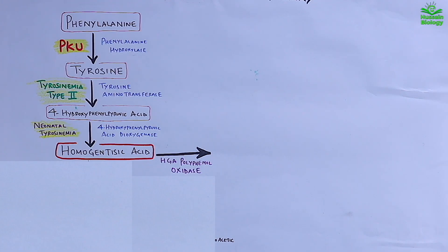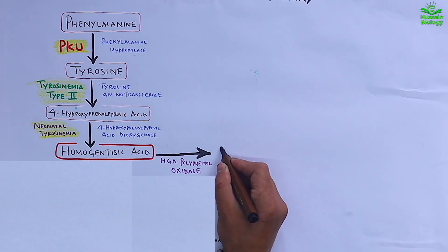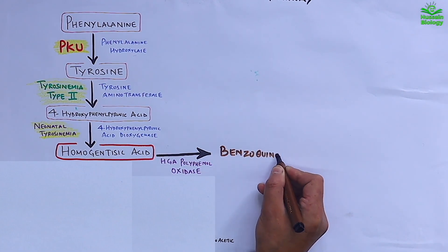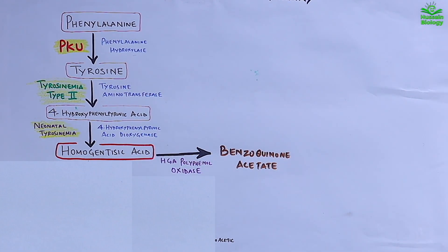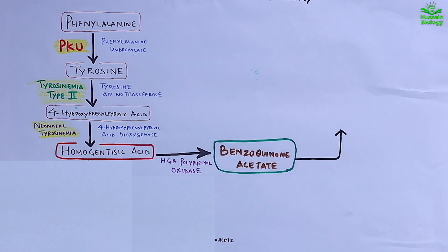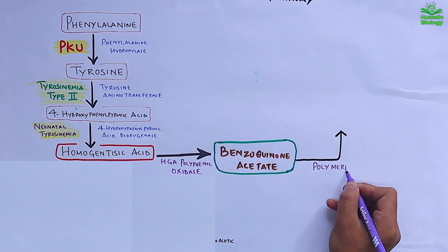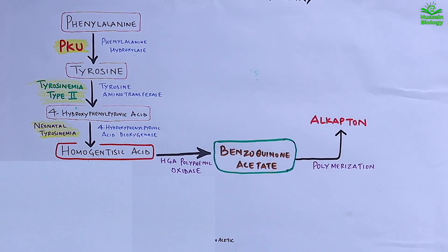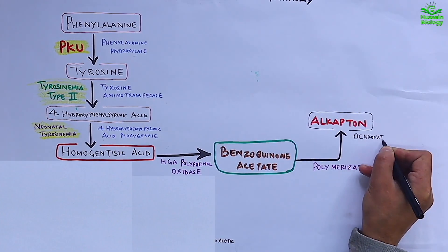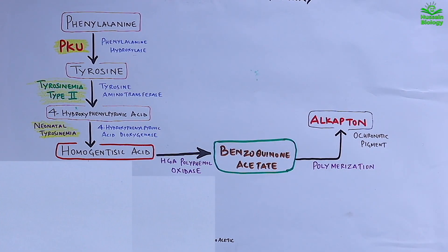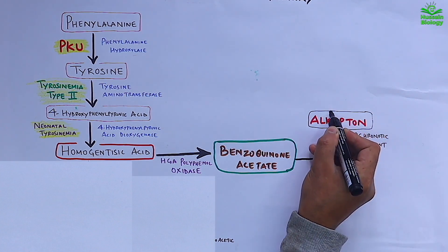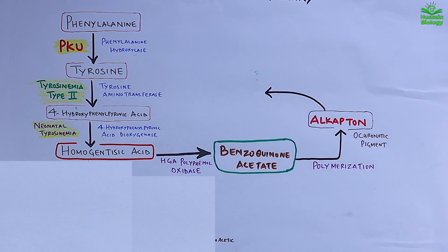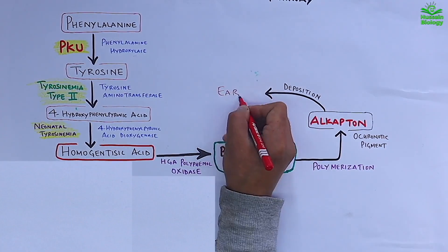From benzoquinone acetate, polymerization begins — benzoquinone acetate is polymerized into alkapton, which is an ochronotic pigment. Alkapton is a dark pigment from which alkaptonuria gets its name. This alkapton is deposited into ear cartilage, ocular tissues, and collagen.